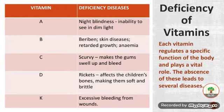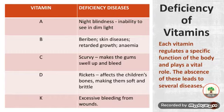Next is deficiency of vitamins. Each vitamin regulates a specific function of the body and plays a vital role, but the absence will lead to disease. Looking at the vitamin deficiency table: Vitamin A deficiency causes night blindness, that is the inability to see in dim light. Vitamin B deficiency causes beriberi, skin diseases, retarded growth, and anemia.